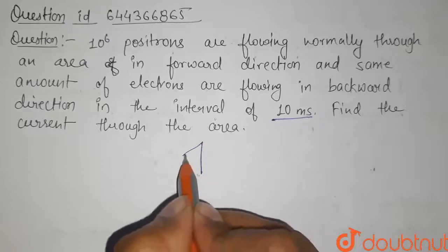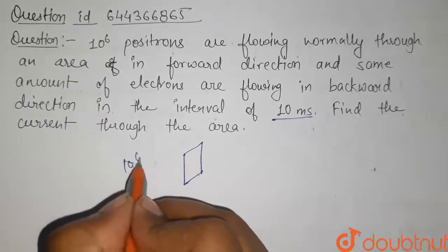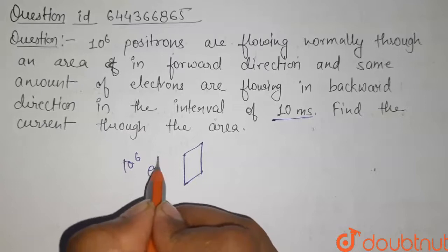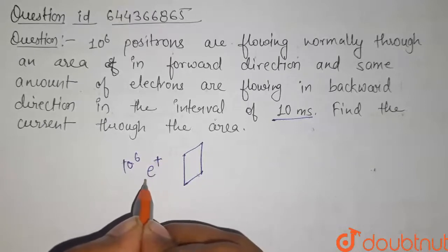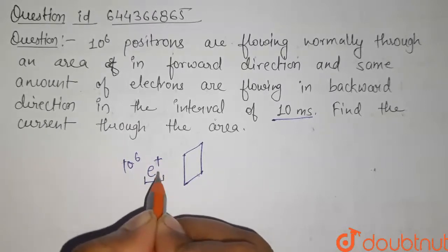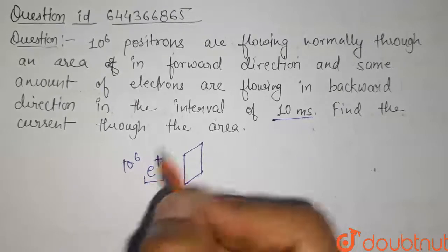Suppose this is our area. Here, 10^6 positrons - the positron has the same charge as that of the electron, but the sign of charge is positive.